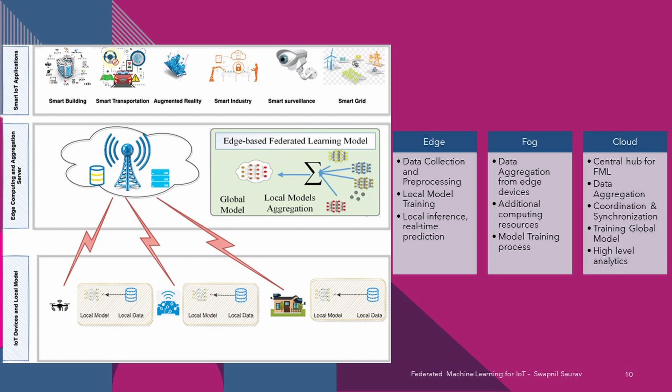The edge layer is responsible for collecting and pre-processing data from local devices or sensors. It performs local model training on edge devices using the collected data, and handles local inference, allowing edge devices to make real-time predictions without relying on cloud resources. By training and inferring locally, the edge layer helps preserve data privacy as raw data does not need to be sent to the cloud. The fog layer acts as an intermediary between edge and cloud layers, providing additional computing power. It performs data aggregation from multiple edge devices, reducing the amount of data transmitted to the cloud, and can perform further pre-processing, feature extraction or filtering to improve data quality.